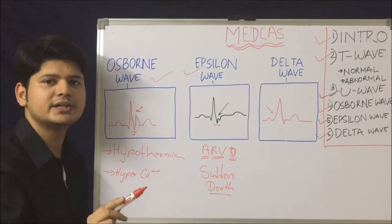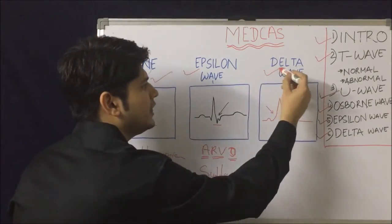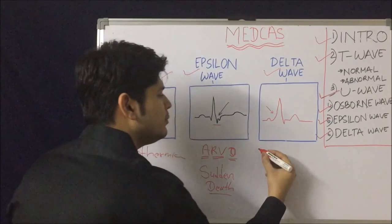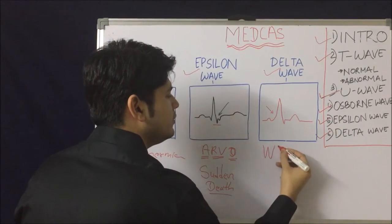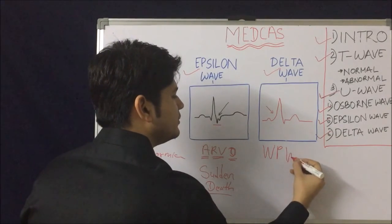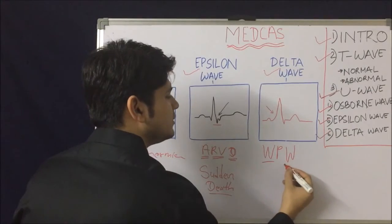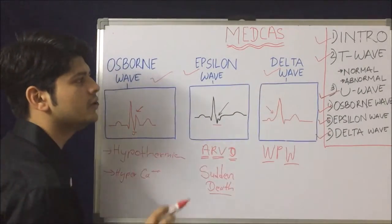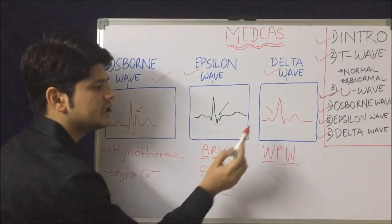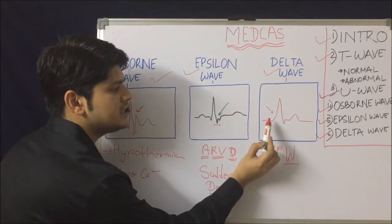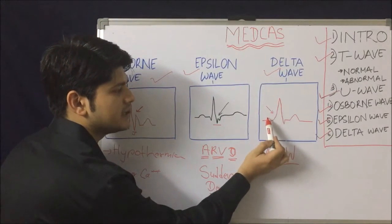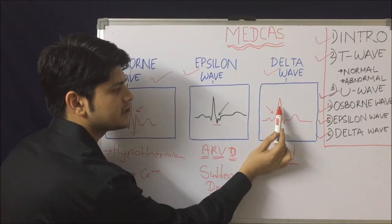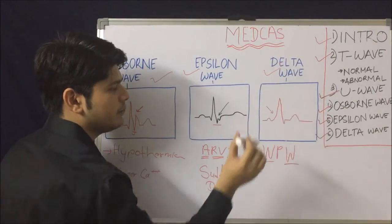Now we will discuss a fairly common condition associated with the delta wave. The delta wave is seen in WPW syndrome — Wolf-Parkinson-White syndrome. The delta wave is the initial slurring of the QRS complex. Here you can see the QRS complex is slurred at the initial deflection — that is called the delta wave.